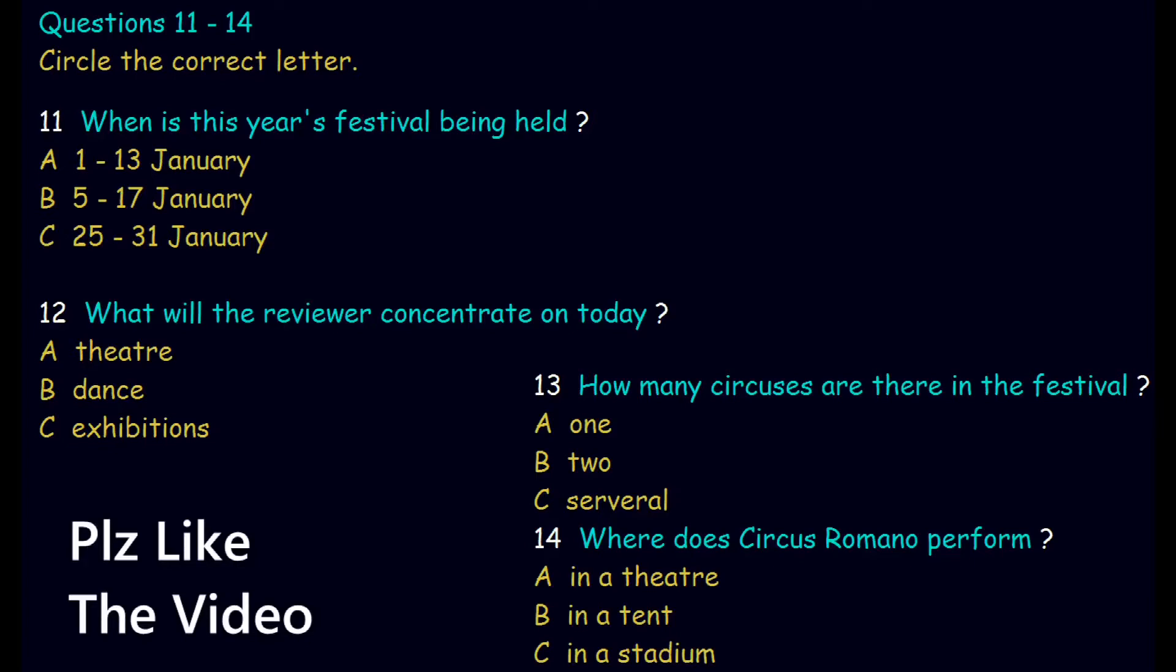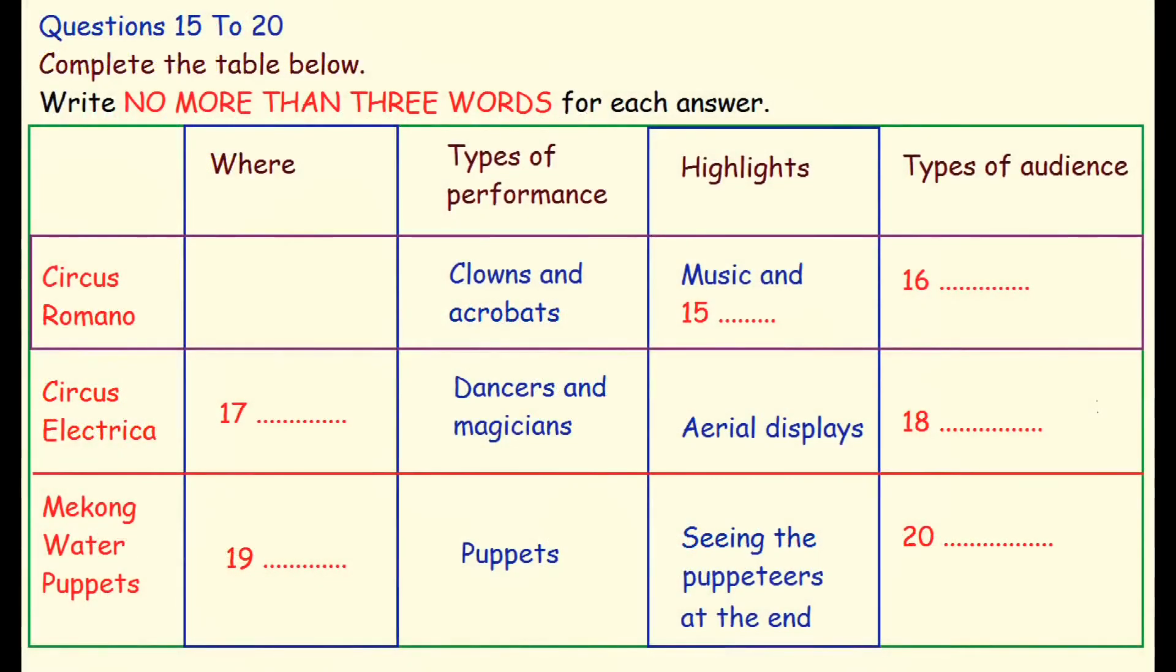I've chosen these because they represent distinct movements within circus performance. The first is the Circus Romano from Italy. As this is a traveling circus, it follows a long tradition by performing in a marquee, which is really like a canvas portable building, usually put up in a green space or car park rather than in a theater or stadium. Before you hear the rest of the talk, you have some time to look at questions 15 to 20.